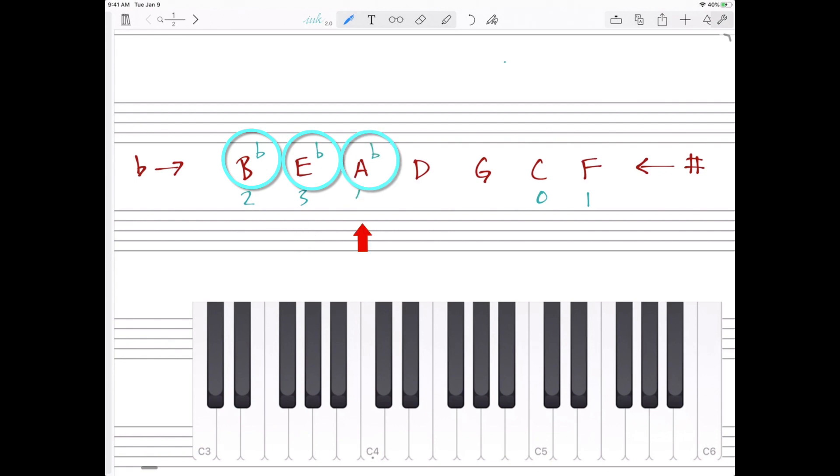The key of A flat has four, and we add the D flat, but we keep all the flats we already have. The same thing with D flat. We have five, but we add the next one, which is G flat.